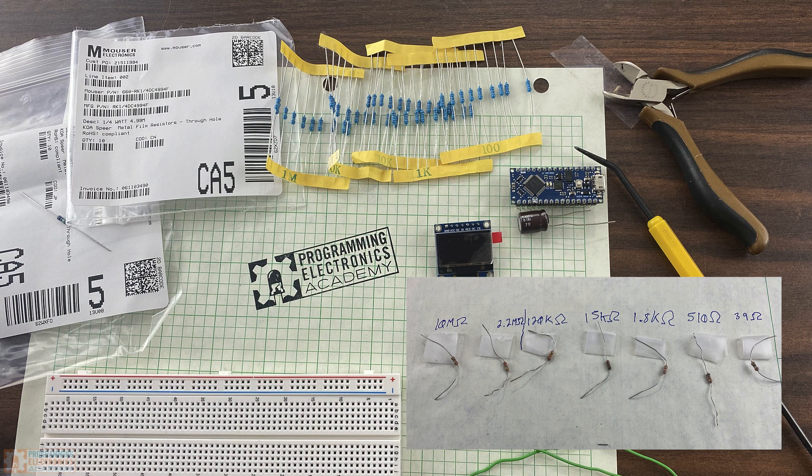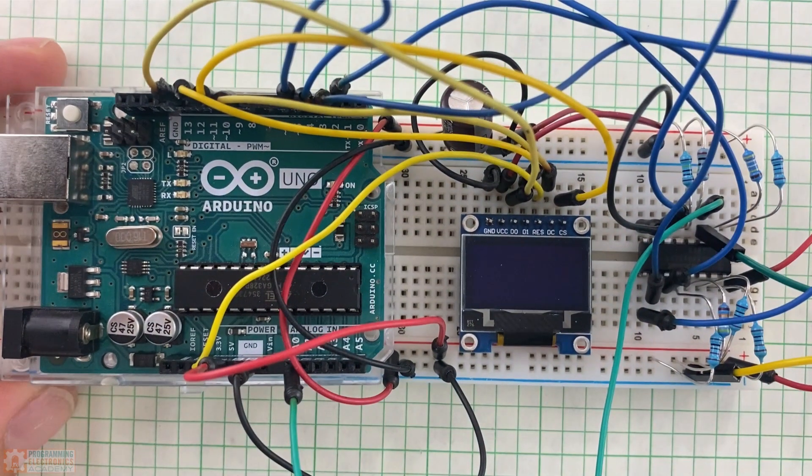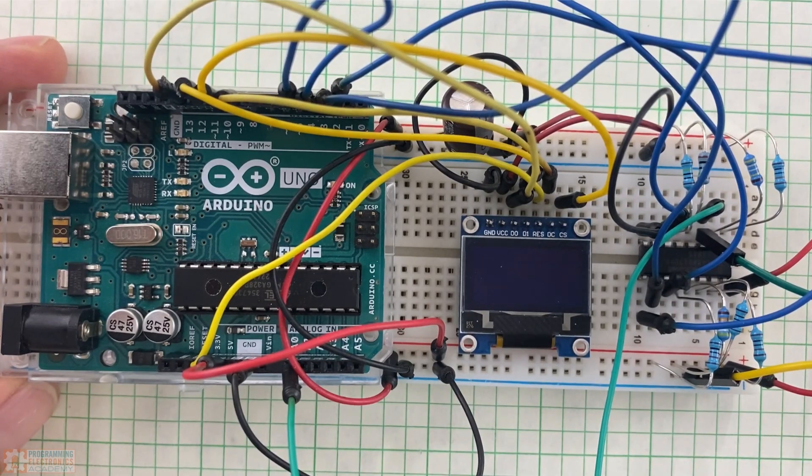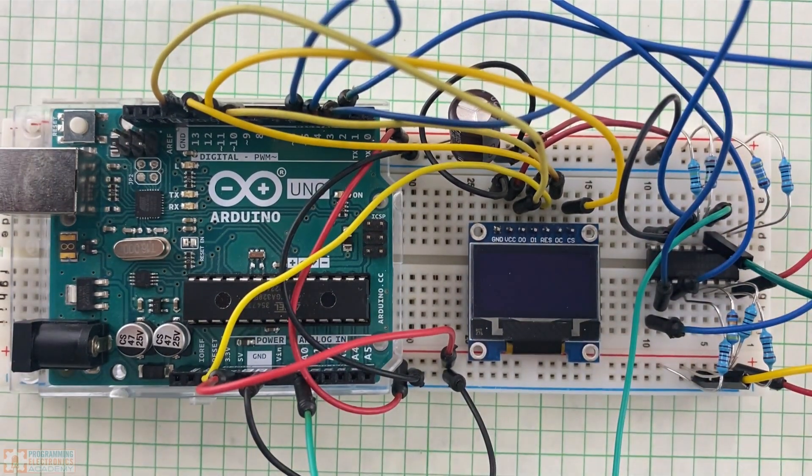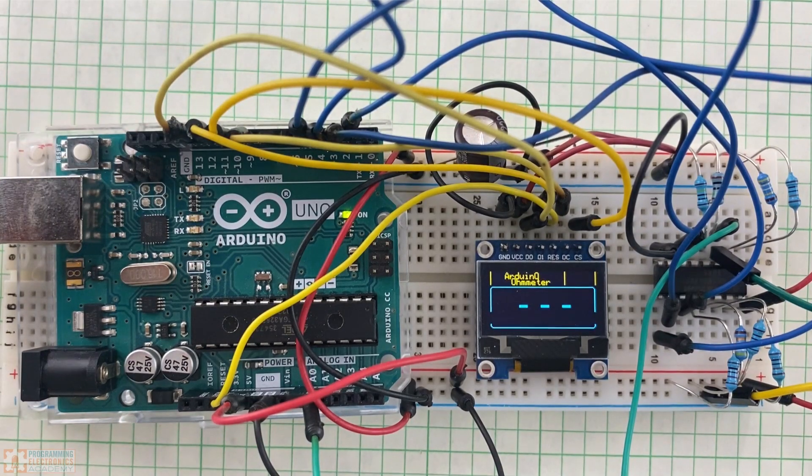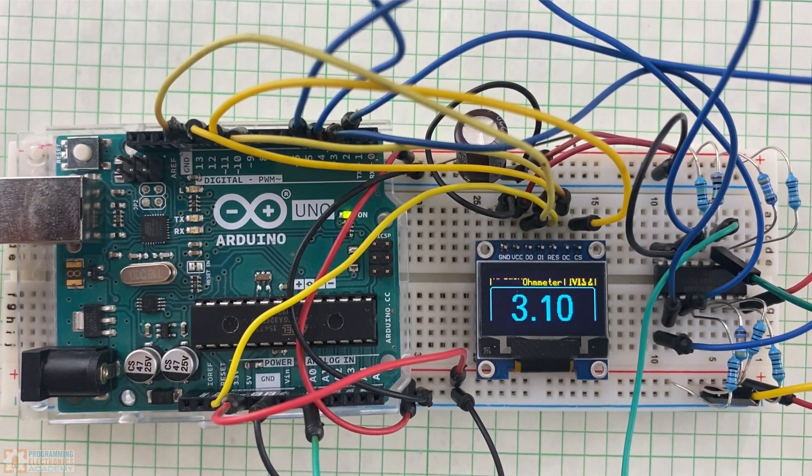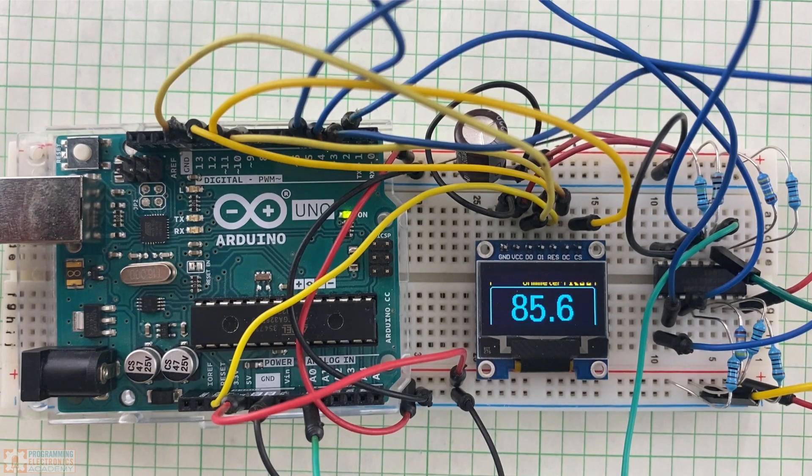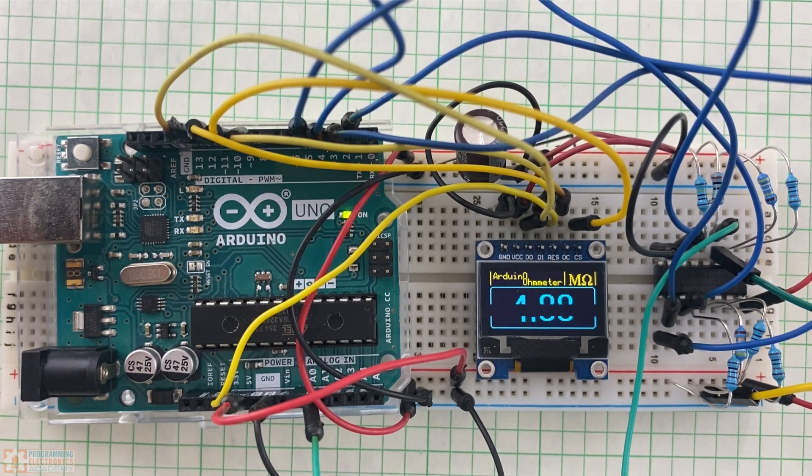And that's pretty much it for the build. It goes together really quick. Once you upload the code, you're ready to start measuring some resistance. And just a reminder, a link to the code is provided in the description. So now, let's go ahead and compare our own meter here with an off-the-shelf Amazon multimeter. But first, a word from our sponsor.